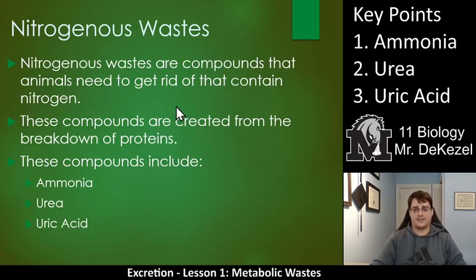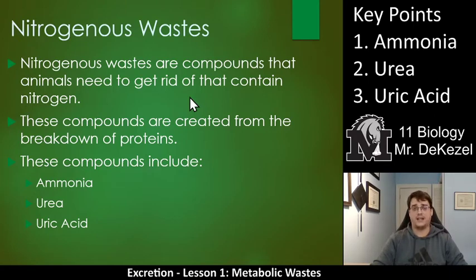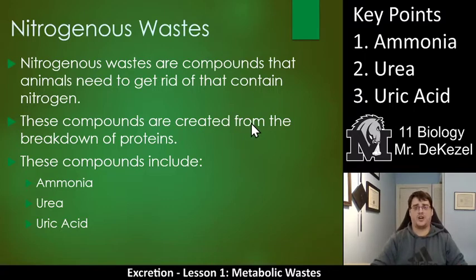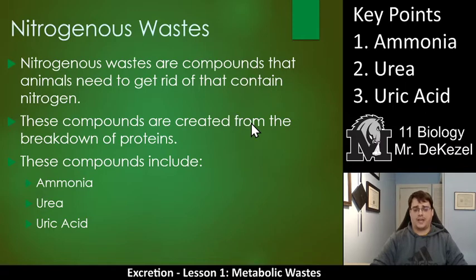Nitrogenous wastes are the ones that are very, very important and the ones that are often most toxic. Nitrogenous wastes are compounds that animals need to get rid of that can contain nitrogen. These compounds are created from the breakdown of proteins. People that eat more protein or more meat generally have more nitrogenous wastes that will need to be broken down and excreted. The nitrogenous wastes are ammonia, urea, and uric acid. Humans only get rid of one of these, and I'll explain why as we talk about them.